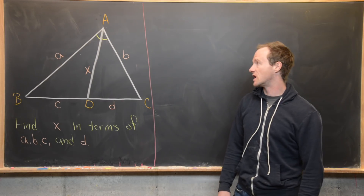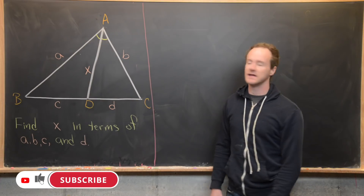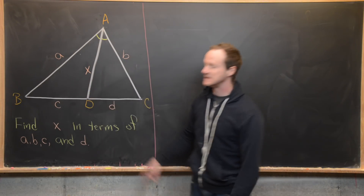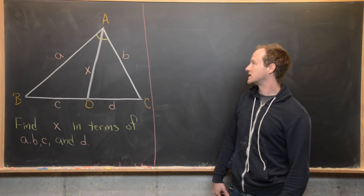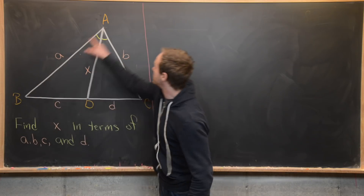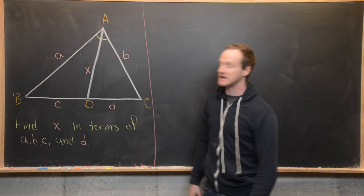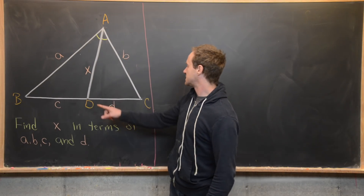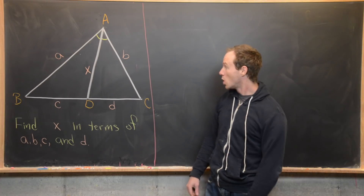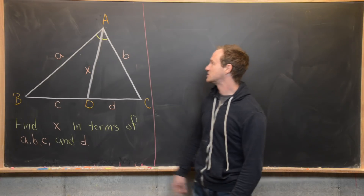Here we've got a nice viewer suggested geometry problem. We've got triangle A, B, C and then we have an extra line segment AD, constructed so that it bisects the angle BAC. So in other words, this angle BAD is congruent to this angle DAC. Our goal is to find the length of this line segment X in terms of a, b, c, and d.